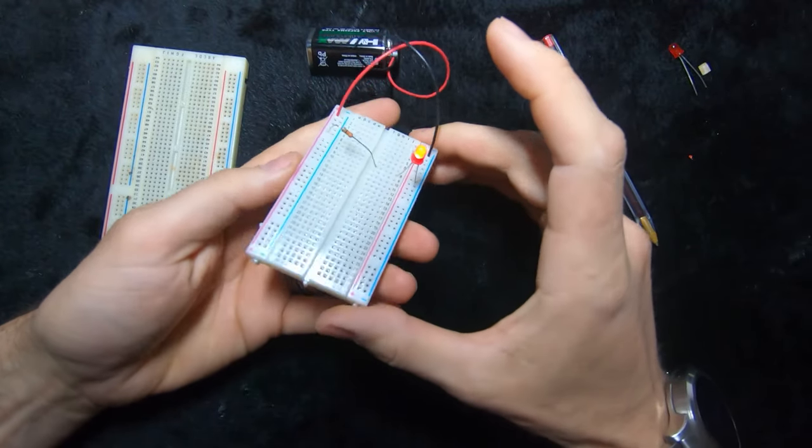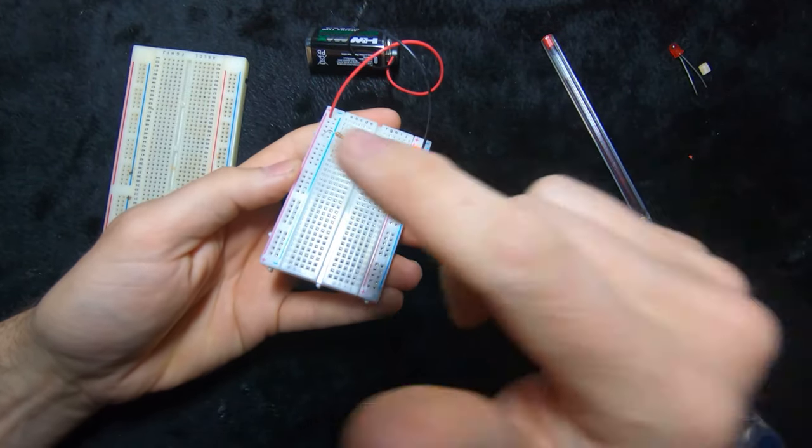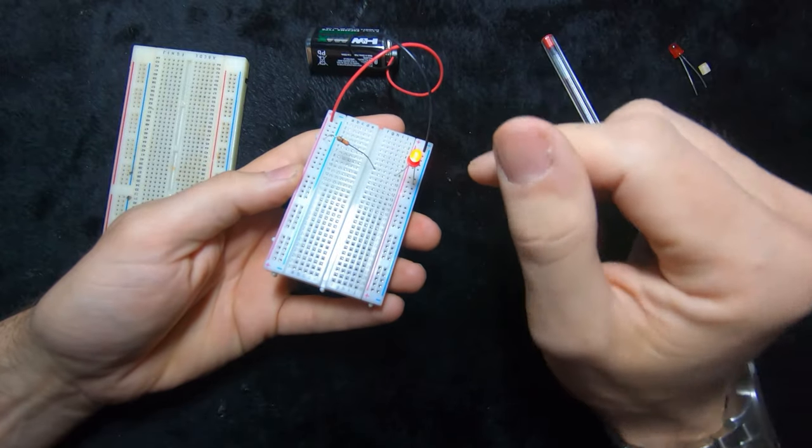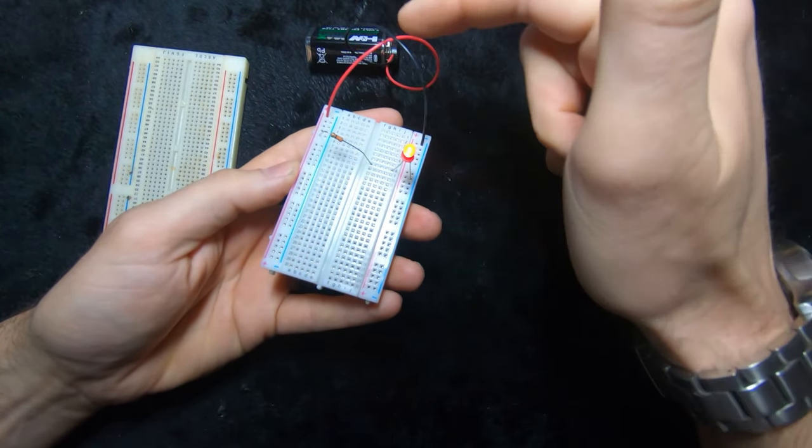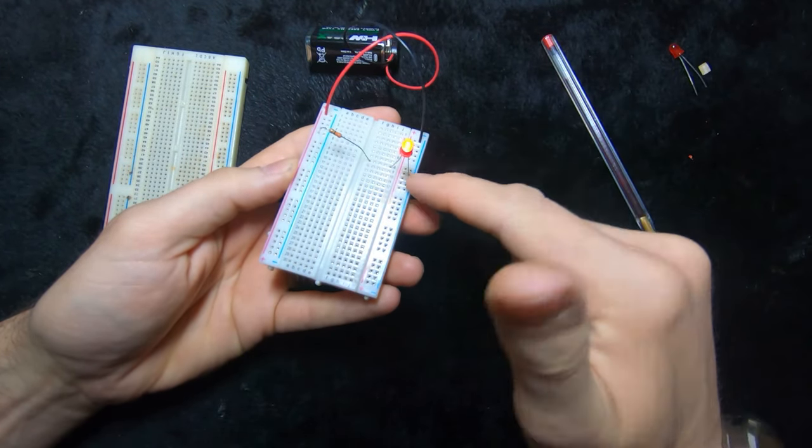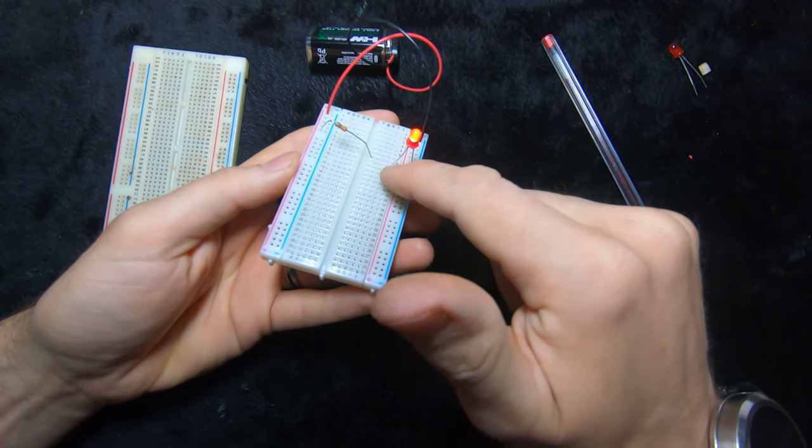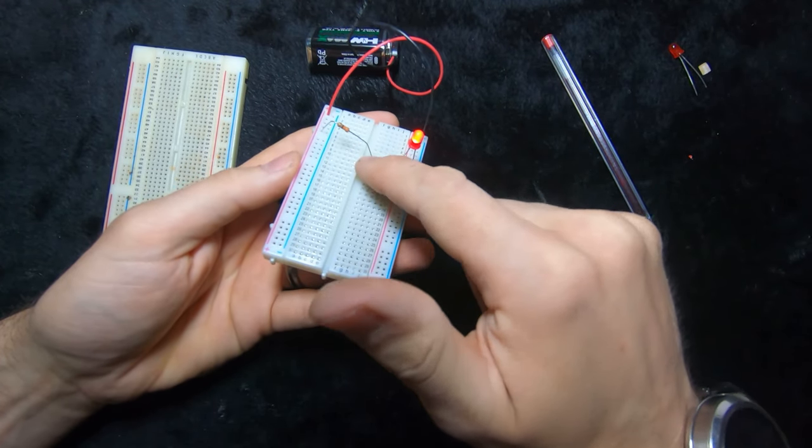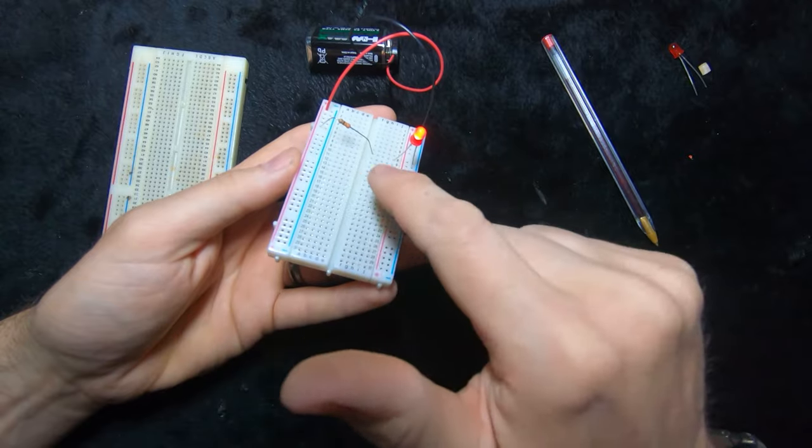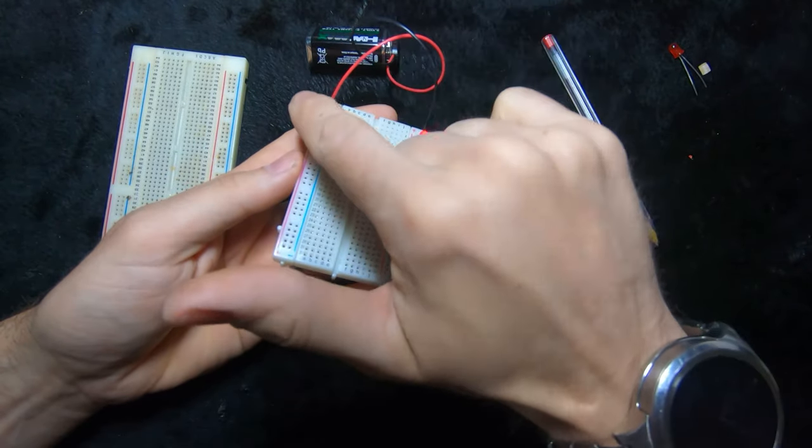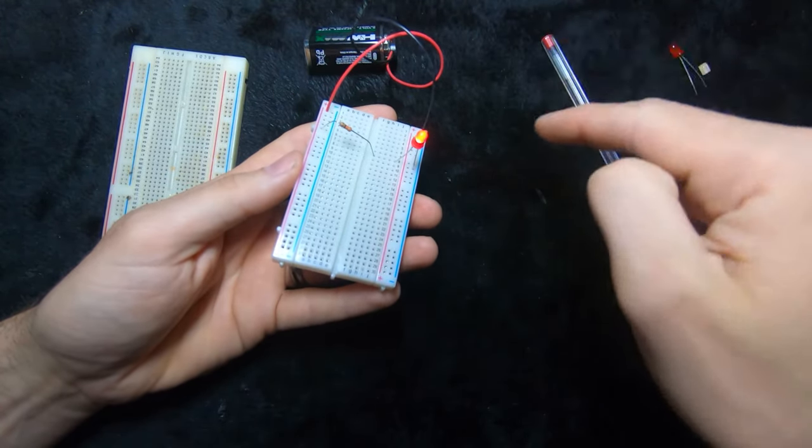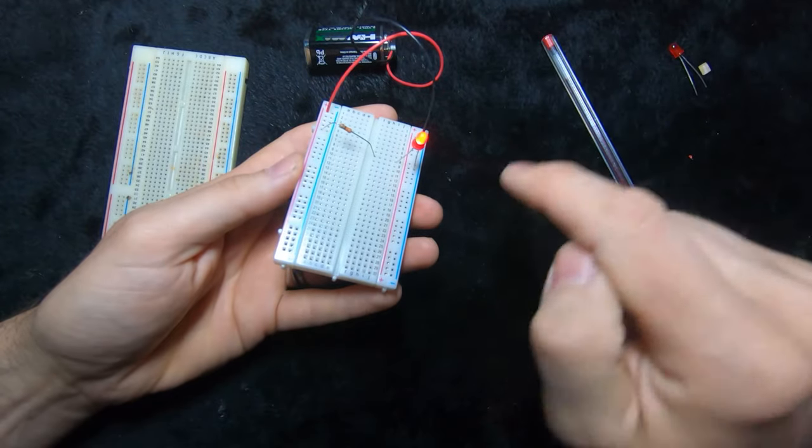Now just to complicate matters, current flows from negative to positive. So we'll treat it like that. It's coming up this line here, it's going along here, it's going through the LED, it's going through this one horizontally, it's going through our resistor which is protecting it, it's coming back down this line and then it's going back into the battery. So we have our loop.